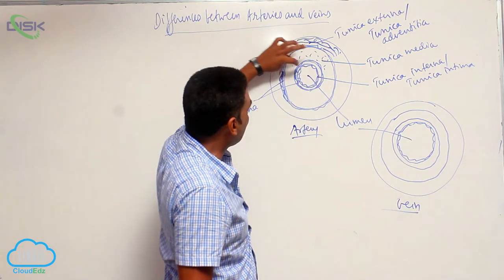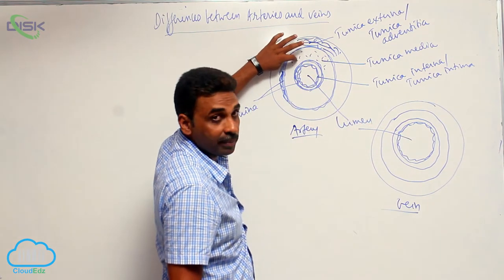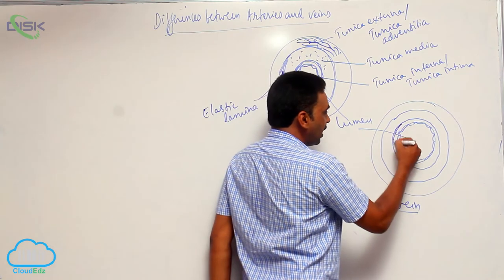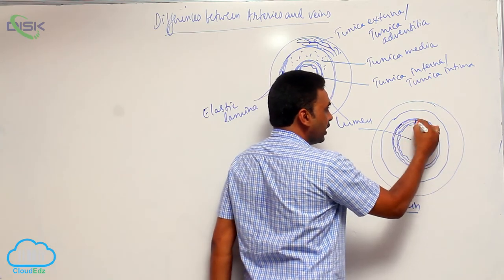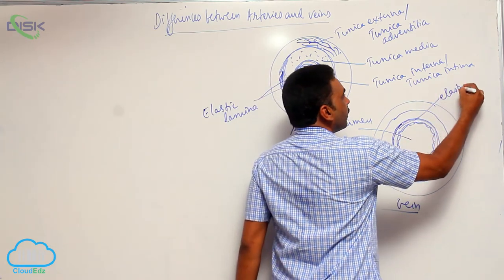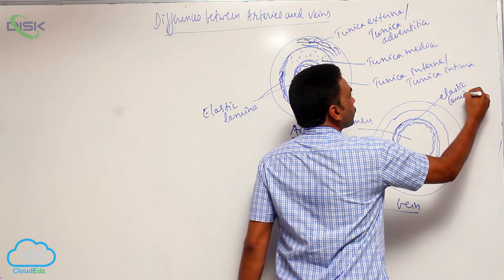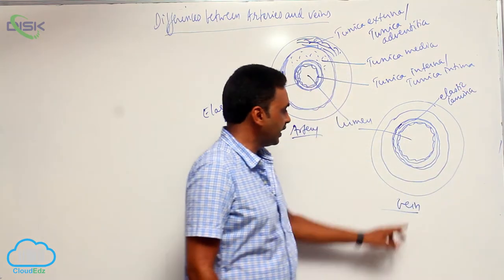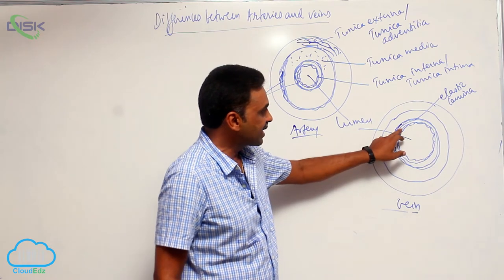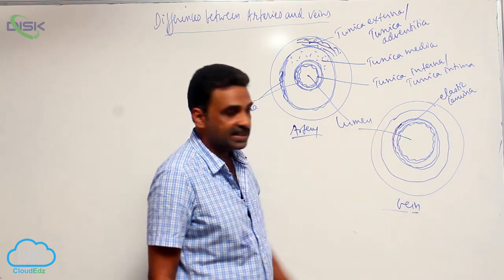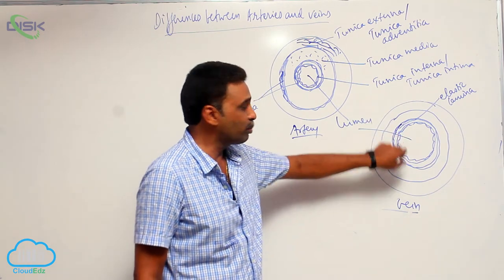Here, we have elastic lamina on both sides of tunica media. But here, we will have elastic lamina only internally. In case of veins, elastic lamina is present towards the inside of that smooth muscles only.